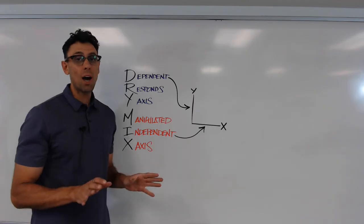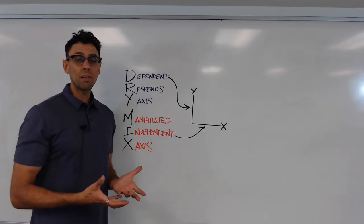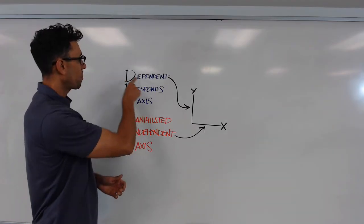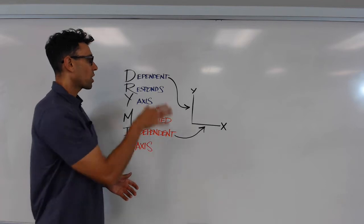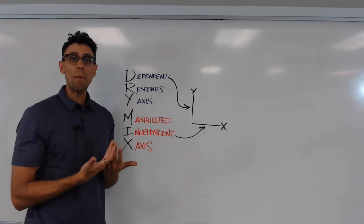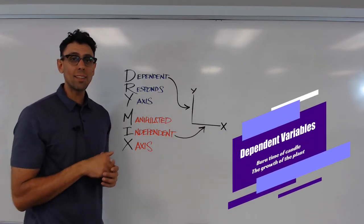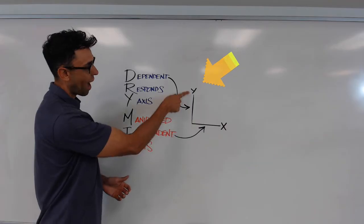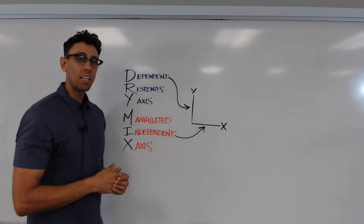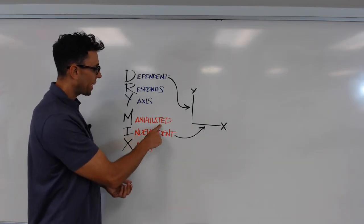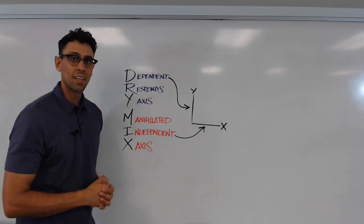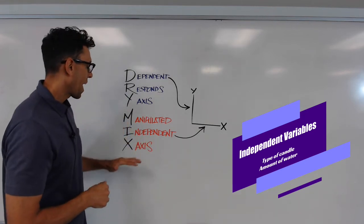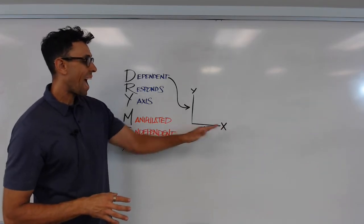To make this concept easier to remember, we're going to use a mnemonic device: DRY MIX. It stands for Dependent Response Y-axis, Manipulated Independent X-axis. Our dependent variable is always the thing that responds to the change we made intentionally. In our examples, that was the melting time of the candle or the growth of the plant, and those always go on the y-axis — the vertical plane of the graph. MIX stands for Manipulated Independent X-axis, so the independent variable — the type of candle or the amount of water — always gets plotted on the x-axis.